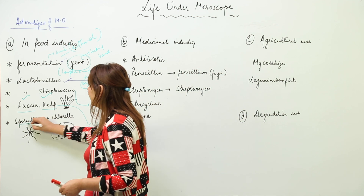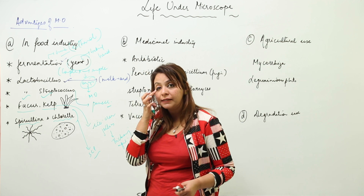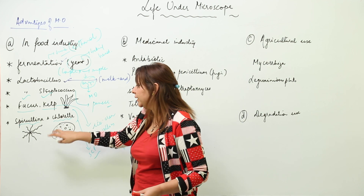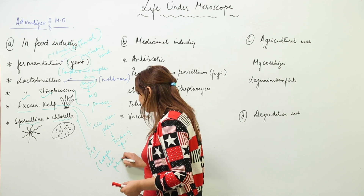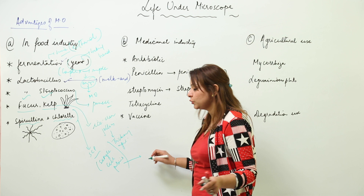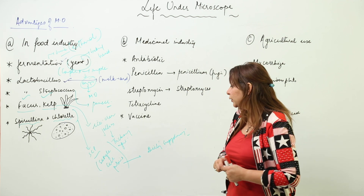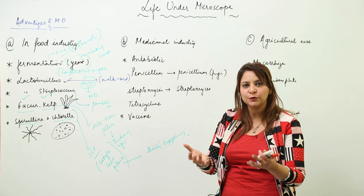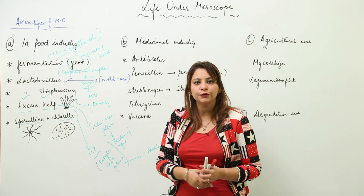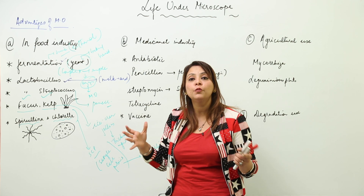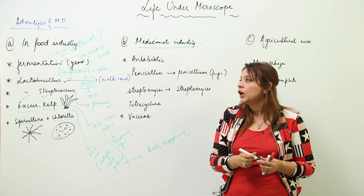We also have Spirulina and Chlorella, which are used in making SCPs — Single Cell Proteins. These are actually components of dietary supplements; they provide extra proteins. So they serve as constituents of the protein and amino acid supplements you take, making them a major part of food industry applications of microorganisms.